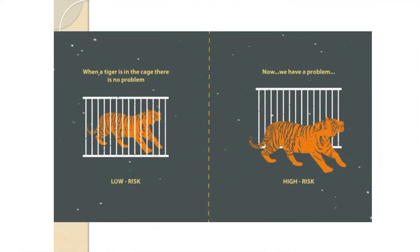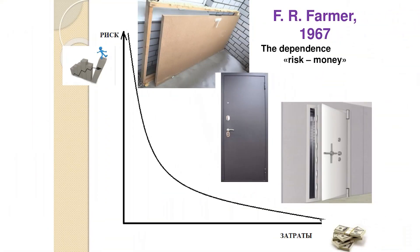Consider a tiger in a cage. Are we absolutely safe from this tiger? Not really — if the cage is not strong enough, the tiger can break it and attack us. But this risk is low and acceptable. If the tiger is outside the cage, however, this is already a high, unacceptable risk and we are in imminent danger. Unfortunately, our security depends on how much money we are willing to pay for it.